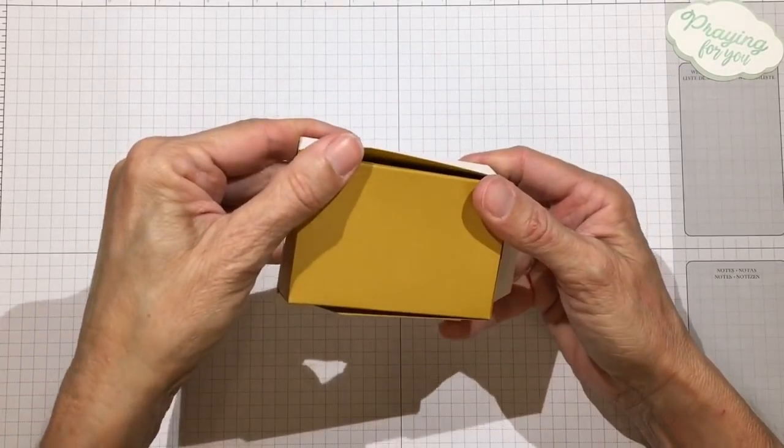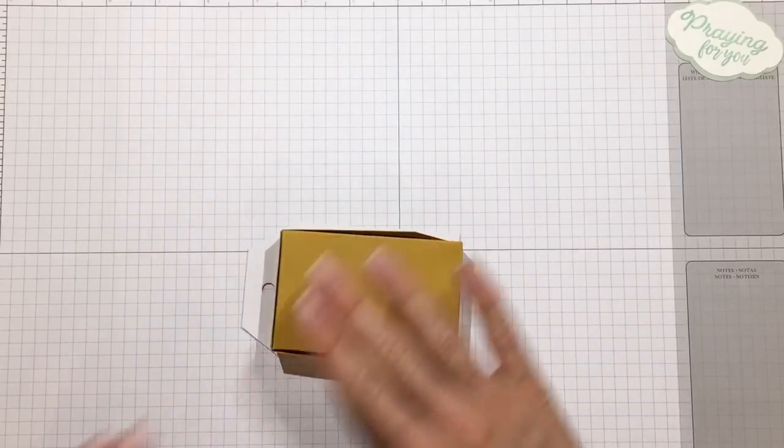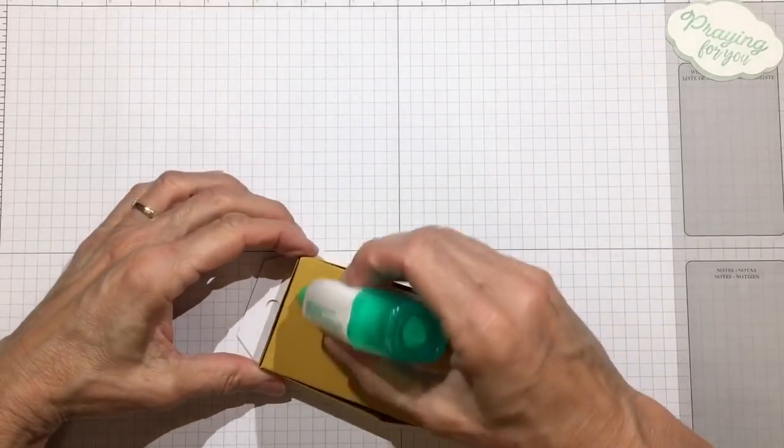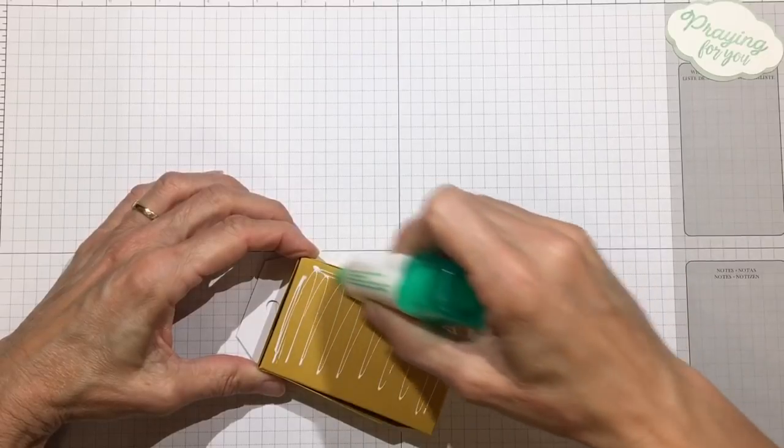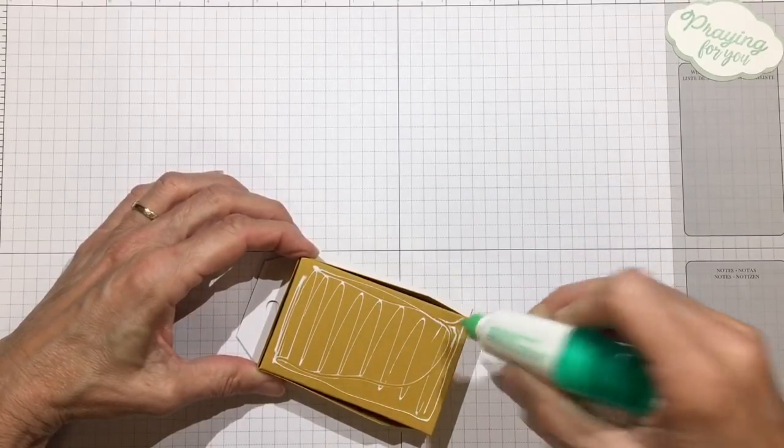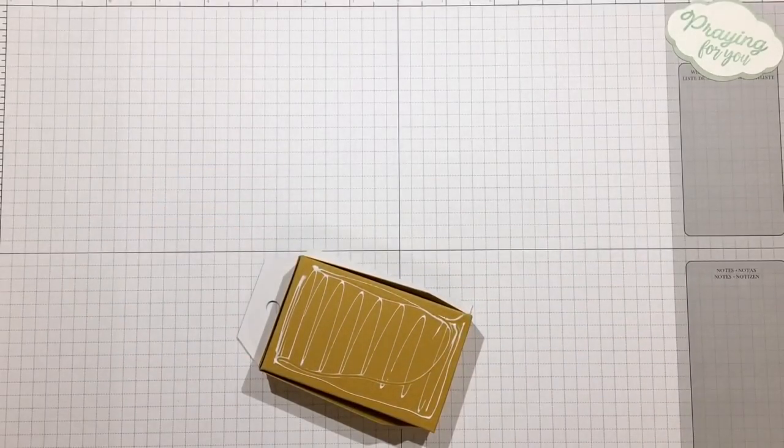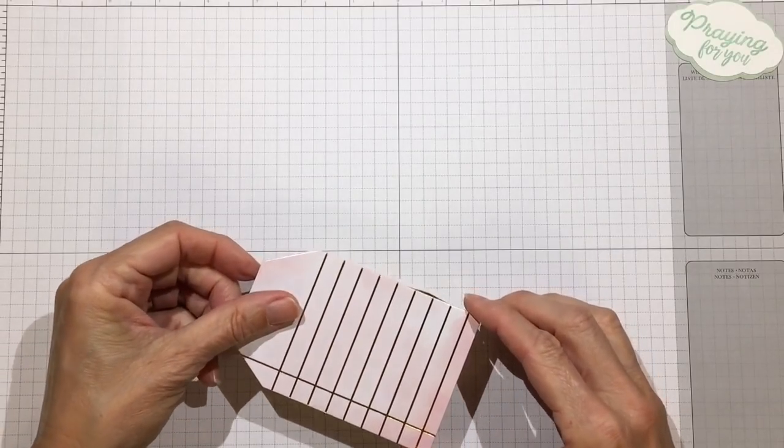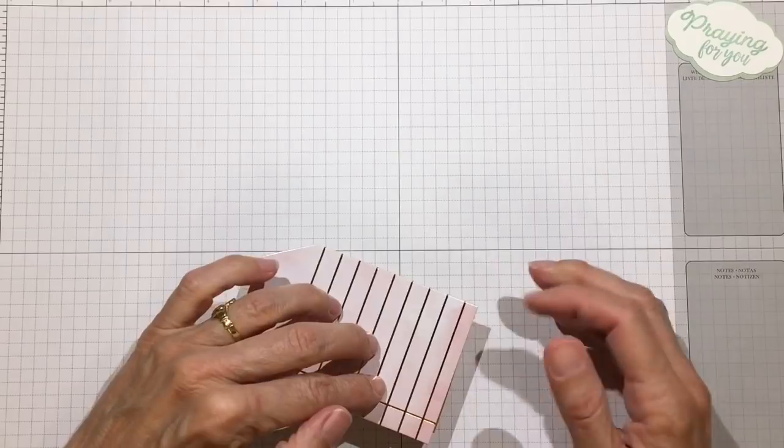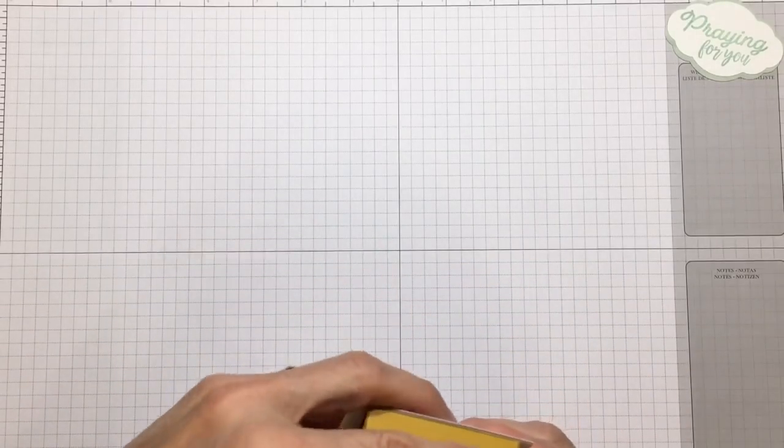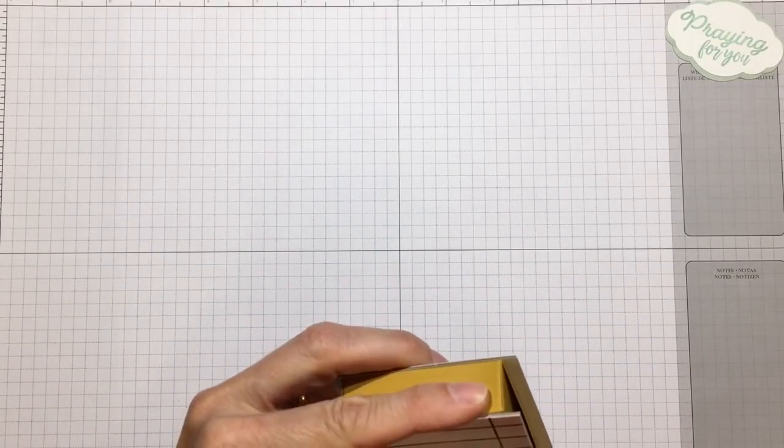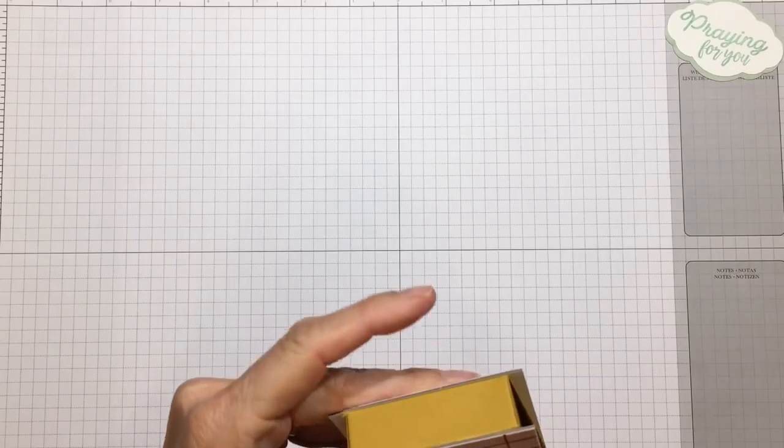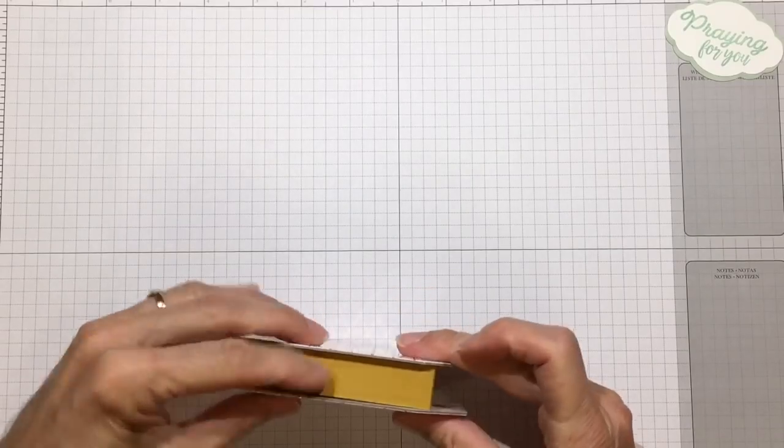Let's go ahead and do the bottom as well. Go ahead and line up this other tag and make sure you have it lined up on the bottom as well. Make sure they're even to each other.